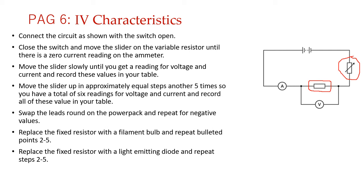When connecting the diode, be careful — a diode or LED only connects in one direction. Make sure the positive of the cell is connected to the positive of the diode and the negative of the cell to the negative of the diode. So you'll get values for the fixed resistor, for the filament bulb, and for the diode, and then you draw the graph.